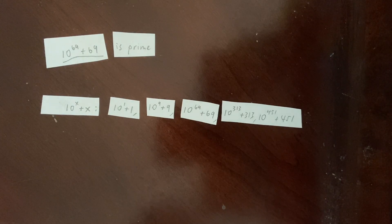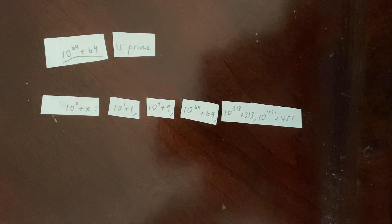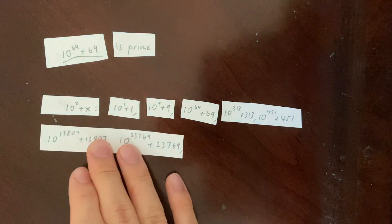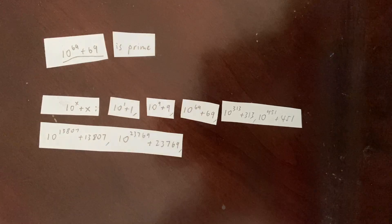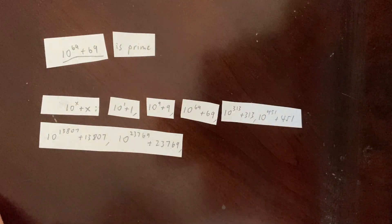And if you keep checking, you get some other numbers, like 10 to the 313 plus 313, and 10 to the 451 plus 451. And then if you keep checking, you'll get these numbers. Yeah, I looked these up on OEIS.